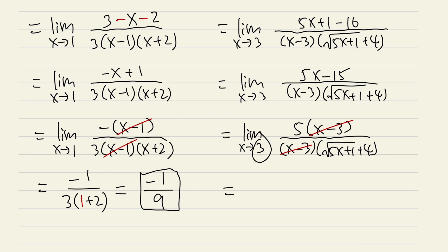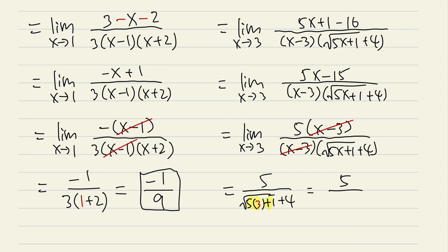Finally, plugging 3 into x, on the top we have 5. On the bottom: 5 times 3 is 15, plus 1 is 16, and the square root of 16 is 4. We also have the additional plus 4, giving 4 plus 4 equals 8. Therefore, the answer for this question is 5 over 8.